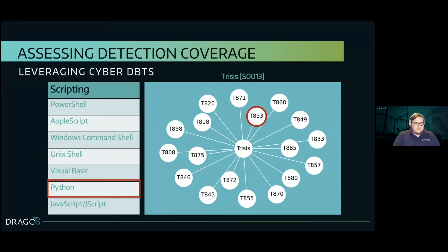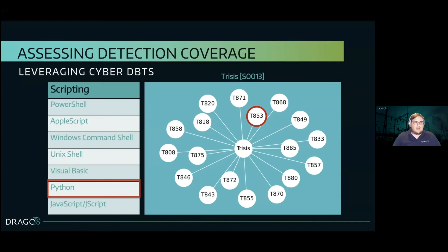Using TTPs can also help us measure our detection capabilities. I've broken down TRISIS — the malware Xenotime used in their safety instrumentation attack — by its threat behaviors, using a mixture of enterprise ATT&CK and ATT&CK for ICS. We're going to focus on scripting T853, because TRISIS used a compiled Python script. We don't want to just detect that specific Python file, but all scripting — this helps if Xenotime switched to PowerShell or Visual Basic. This ensures we have resilient detections based on threat behavior and not simply indicators.